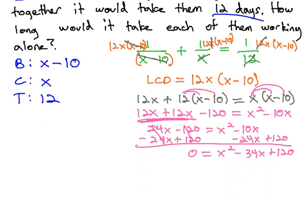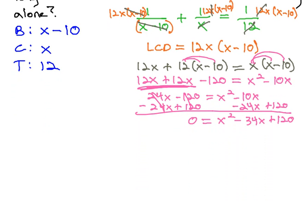I'm going to scroll a bit so that we can solve this. We're going to solve by factoring, because you should be able to see that 120 is 4 times 30, x minus 30 and x minus 4.